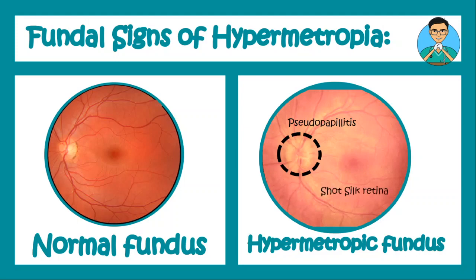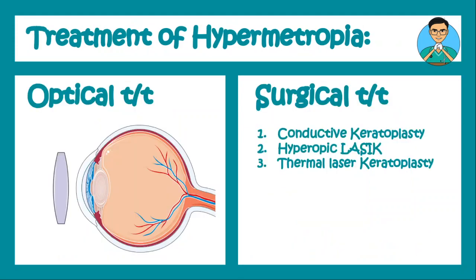Another fundal appearance is known as shot silk retina. Because the eyeball is small, the light from the ophthalmoscope is brilliantly reflected back, and hence the retina appears more illuminant — more bright and shiny.